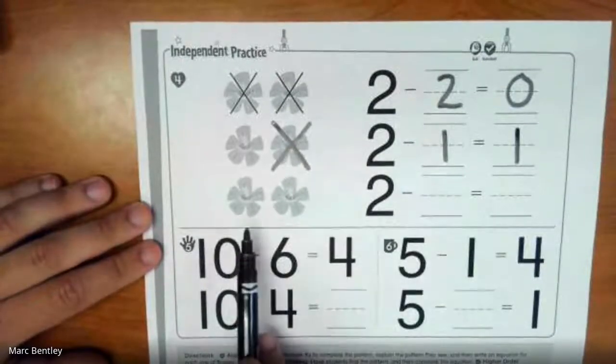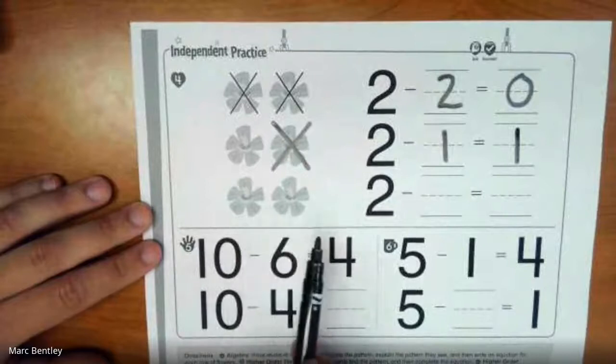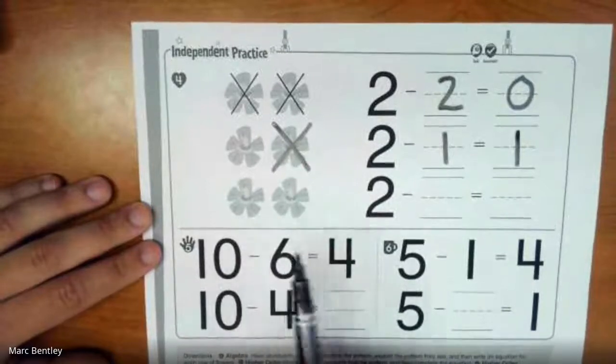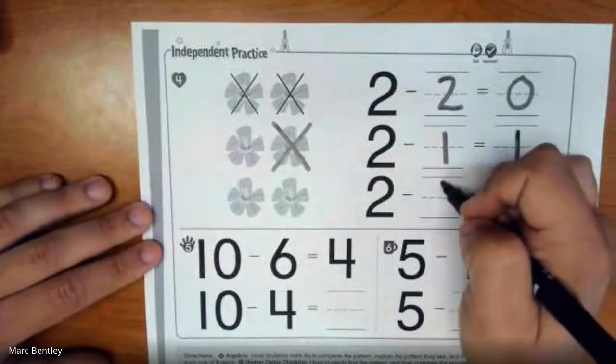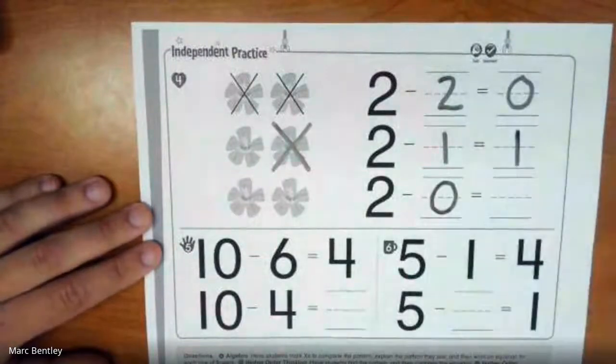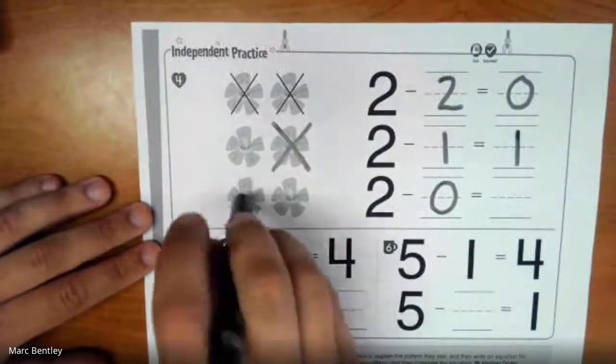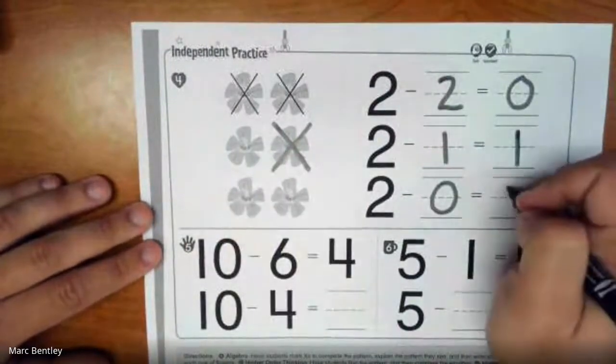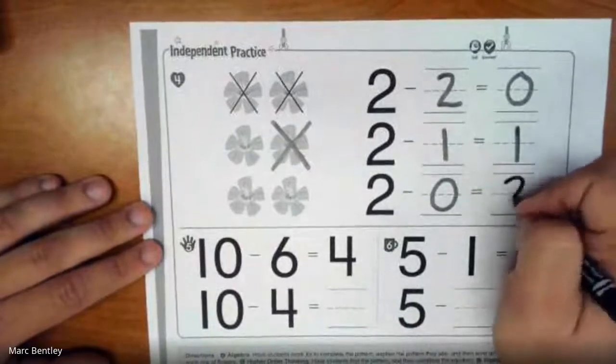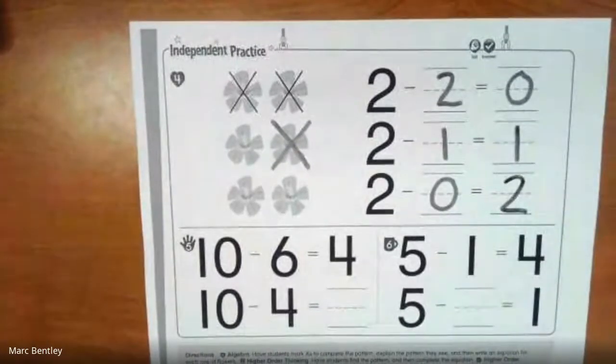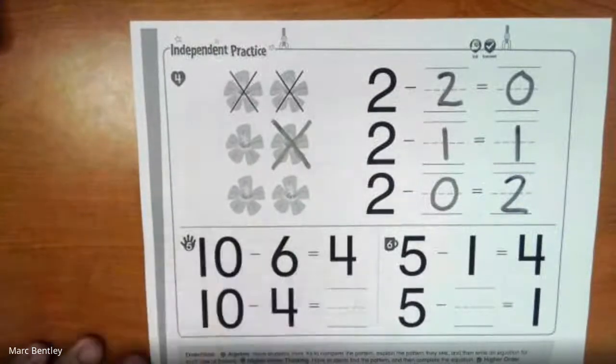And then over here, we're going to keep both of the flowers. So we're not going to take any away. And we can see that we have 2 minus 0. We still have our 2 left. So 2 minus 0 equals 2. Okay, moving down to number 5.